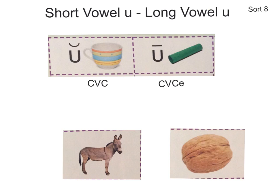Today we're going to talk about short U and long U for Words Their Way. We're on Sort 8. You should already have your words cut out with your number on the back of each word. Also, make sure you have your word sort mat ready to go. Let's talk about our short U and long U today.